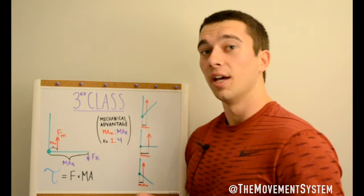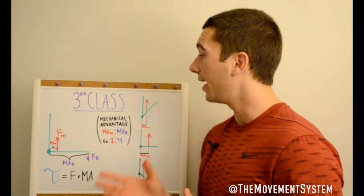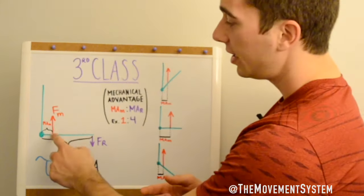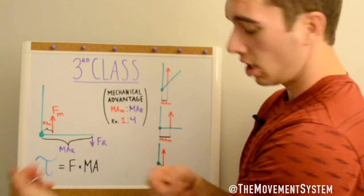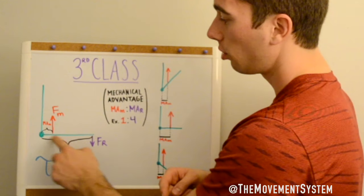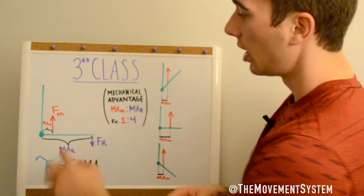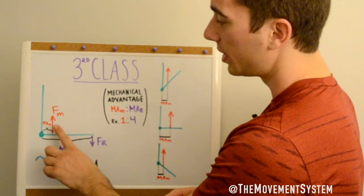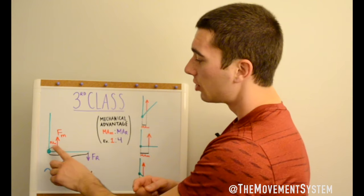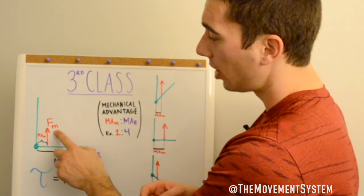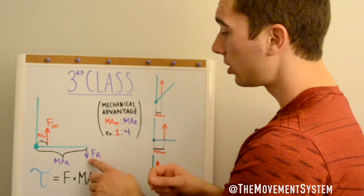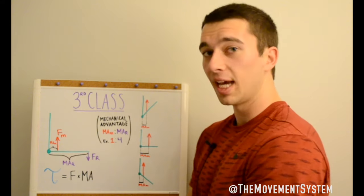Let's start talking through the third-class lever — this is the most common class of lever in the body. An example would be a bicep curl. The tendon of the bicep actually inserts on the front of the forearm. The muscle force points up because that muscle is going to shorten and go up towards the shoulder. The force of resistance would be the weight in the hand — a dumbbell or cable.